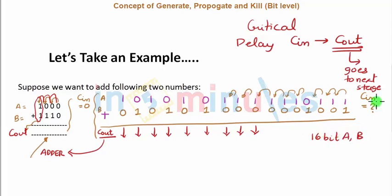If you see here, the 16-bit numbers A and B, and if my C in is equal to 1, without doing this rippling effect I can straight away still say that my C out is equal to 1. How did I do this?